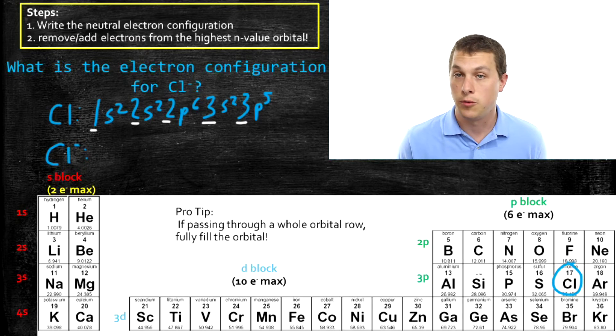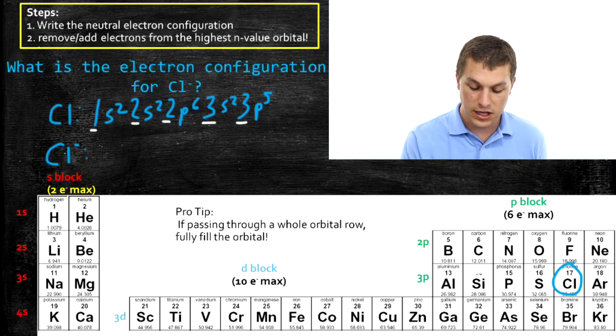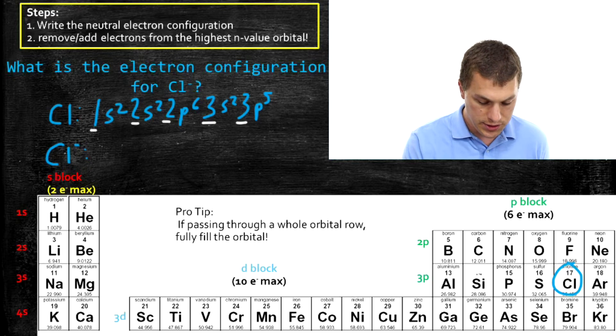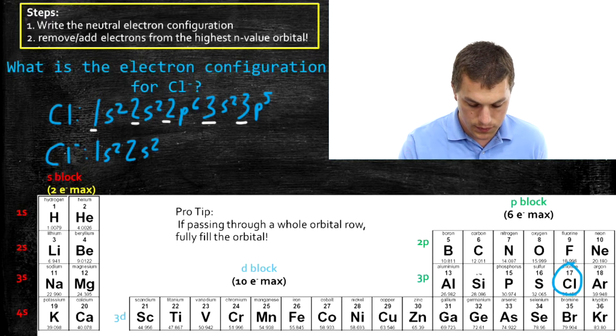The 3S can't hold any more electrons, so we can't add it there. So it's going to be added to the 3P. And we just go 1S2, 2S2, 2P6, 3S2, 3P6.